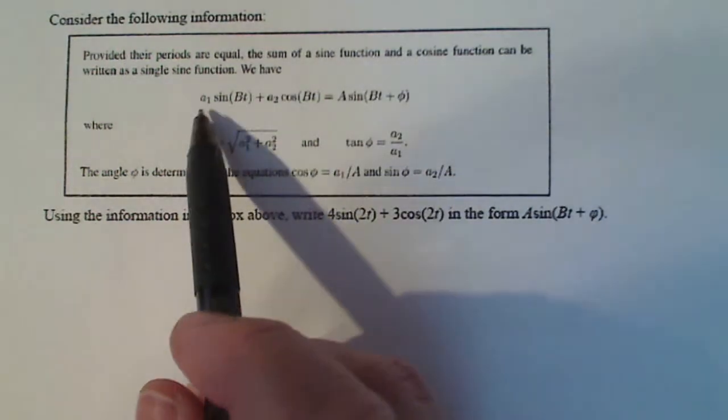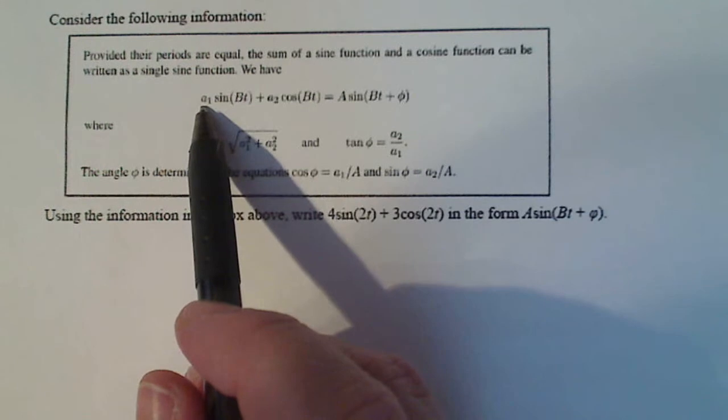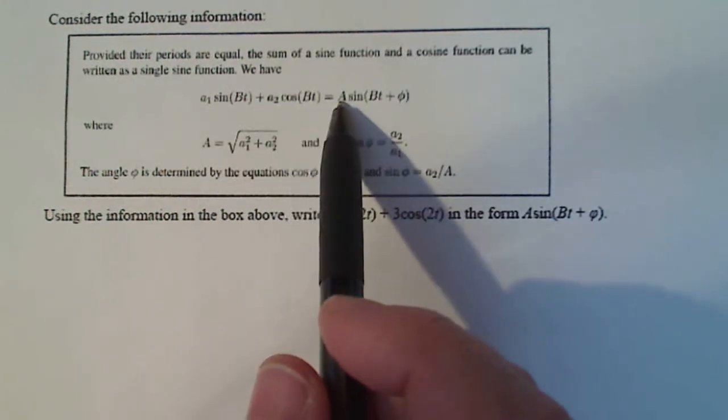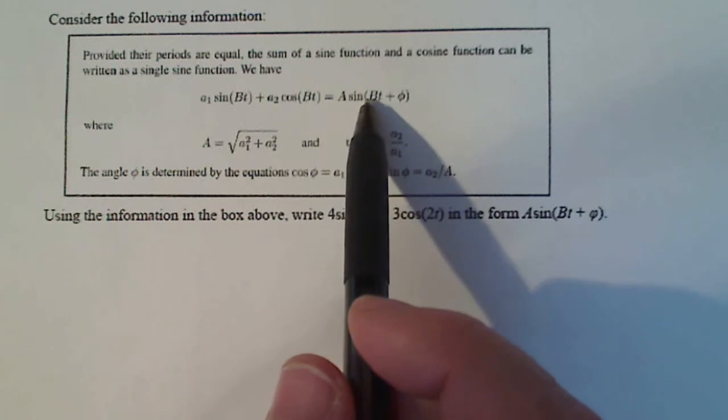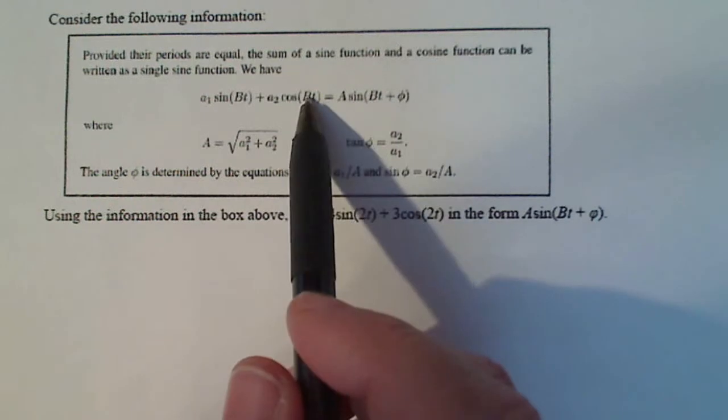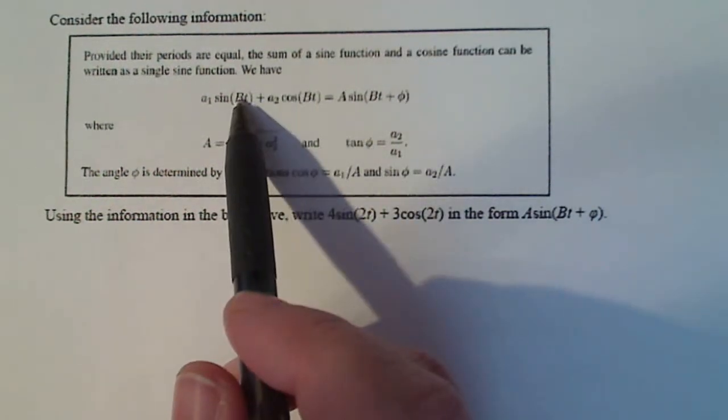It tells you exactly if I have a function that's written a1 sine bt plus a2 cosine bt, I can rewrite it as capital A sine bt plus phi. Notice this b here is the same as that b there is the same as that b there.